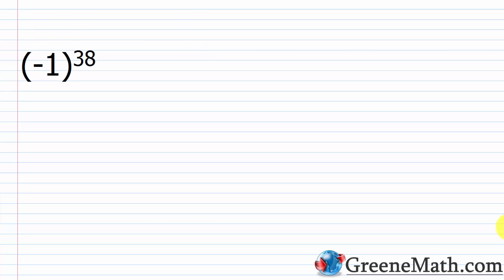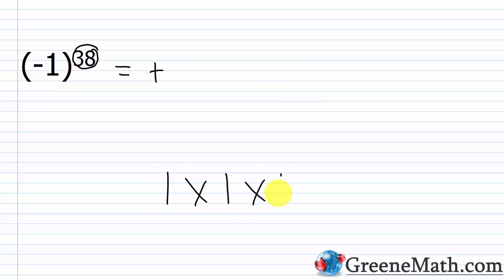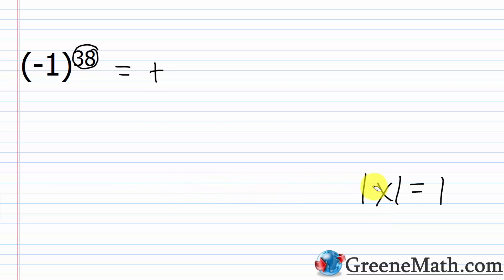What about negative 1 to the 38th power, with negative 1 in parentheses? Well, 38 is an even number, so we know the answer is going to be positive. What's cool about 1 is that when you multiply it by itself, the number is unchanged — 1 times 1 times 1, no matter how many times, is still 1. So 1 to the 38th power is just 1. Since the exponent is even, I have an even number of negative factors, giving a positive result: positive 1.